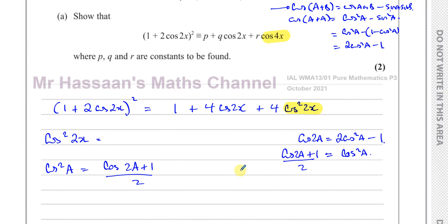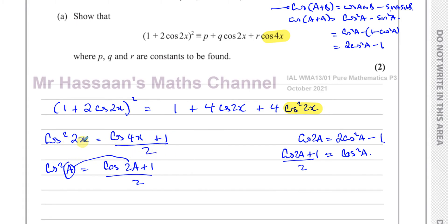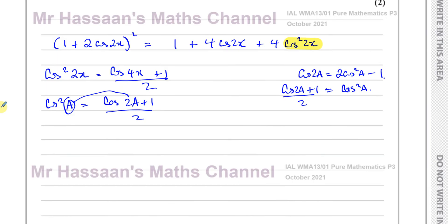Comparing the identity to what we have: a corresponds to 2x, so 2a becomes 4x. Therefore cos²2x = (cos4x + 1) / 2. I've now shown that cos²2x equals (cos4x + 1) over 2, so I can replace cos²2x with this expression.